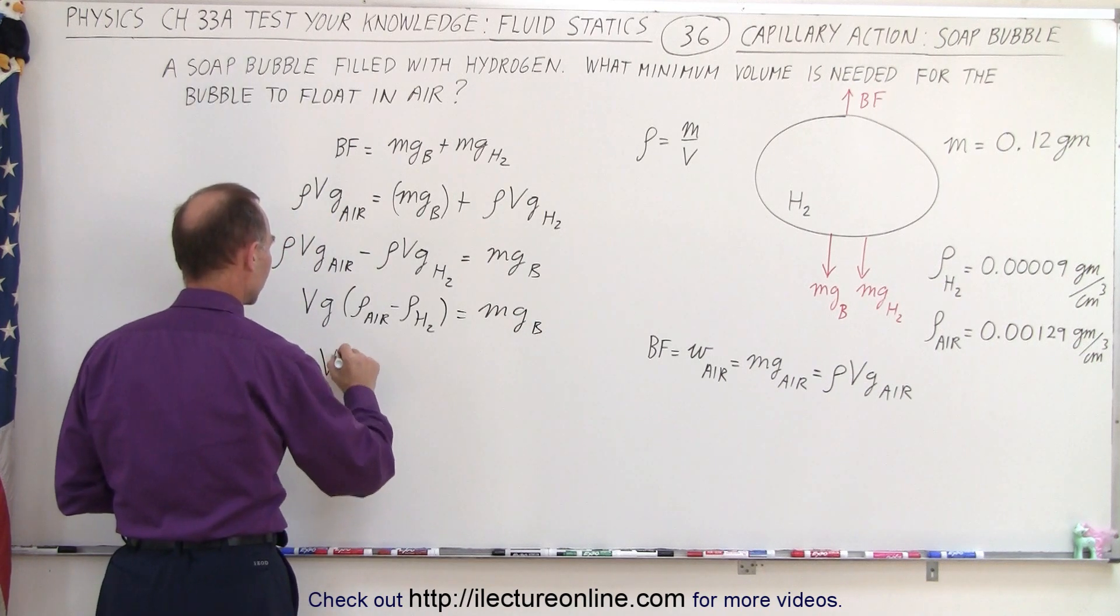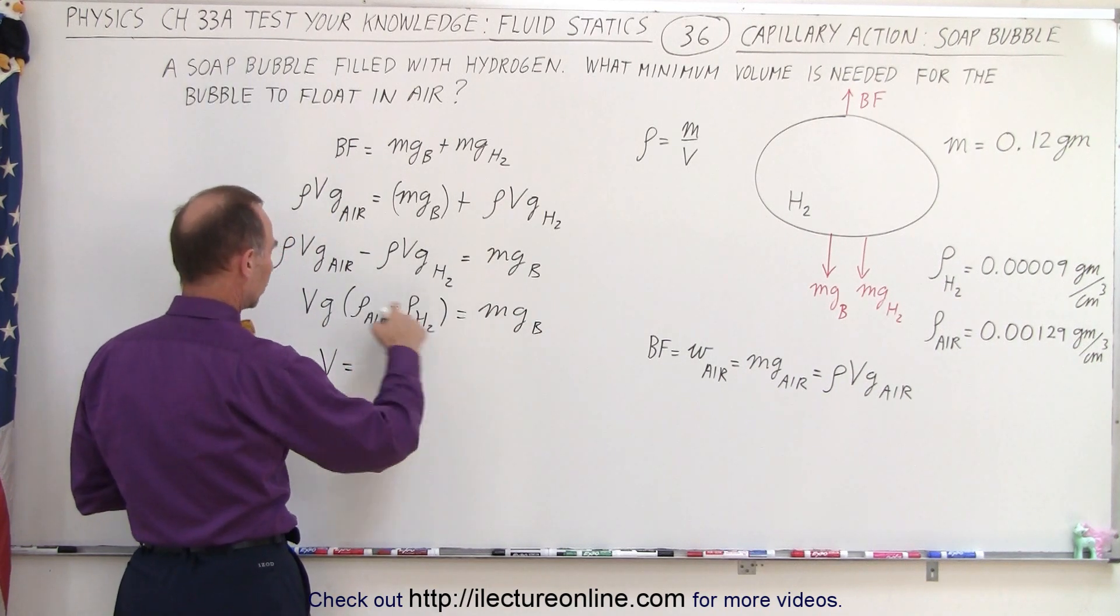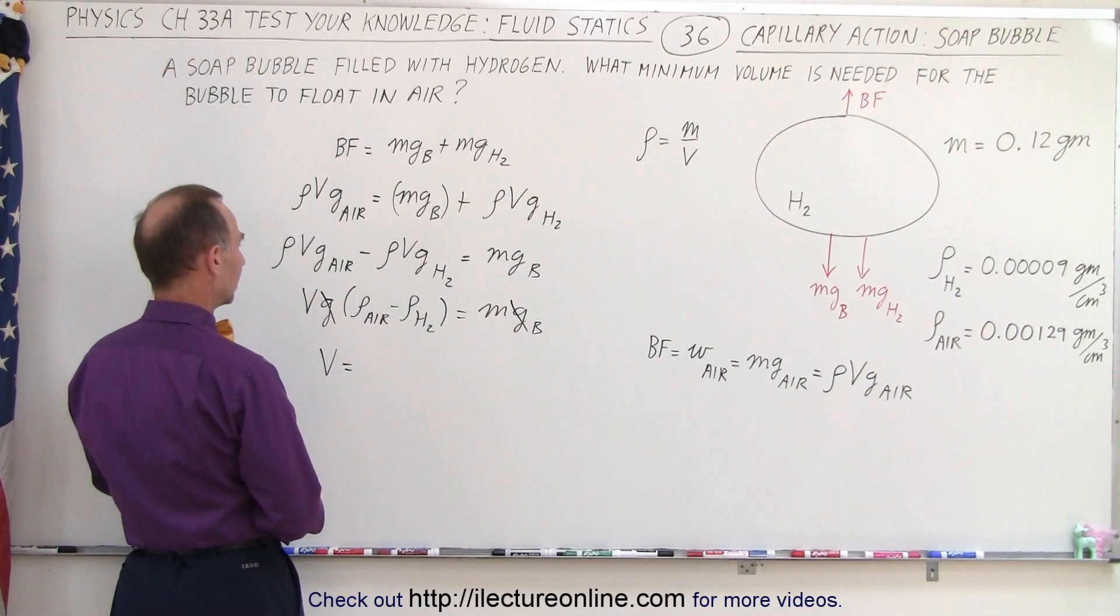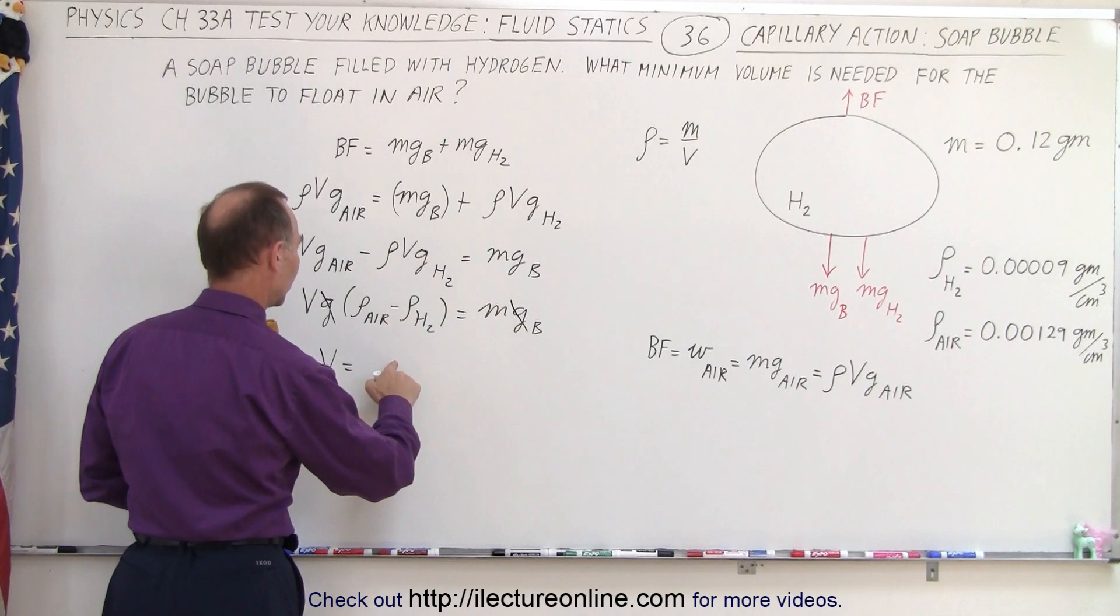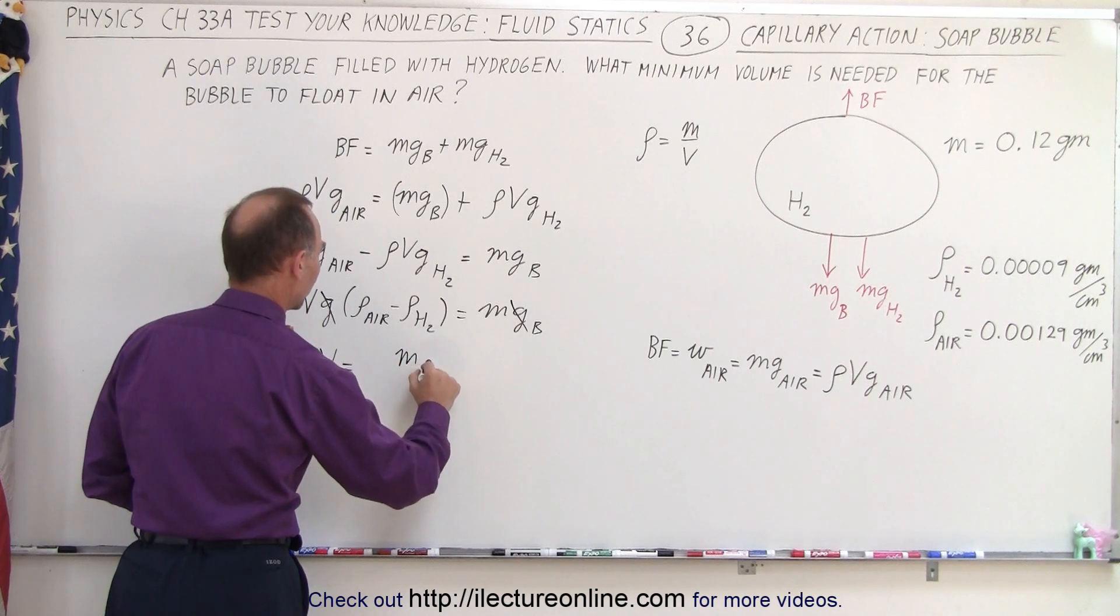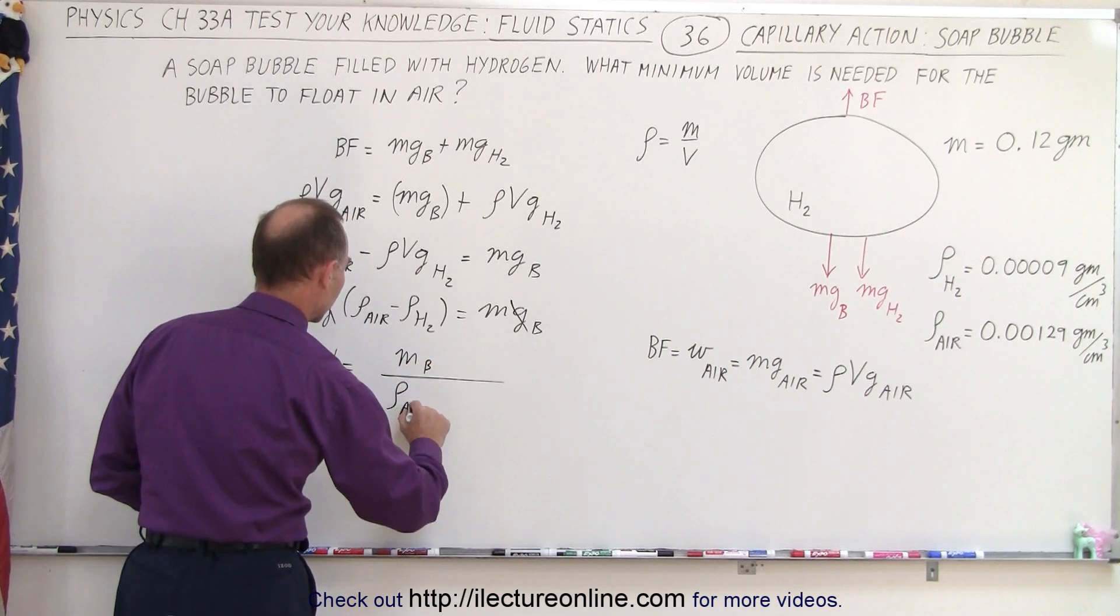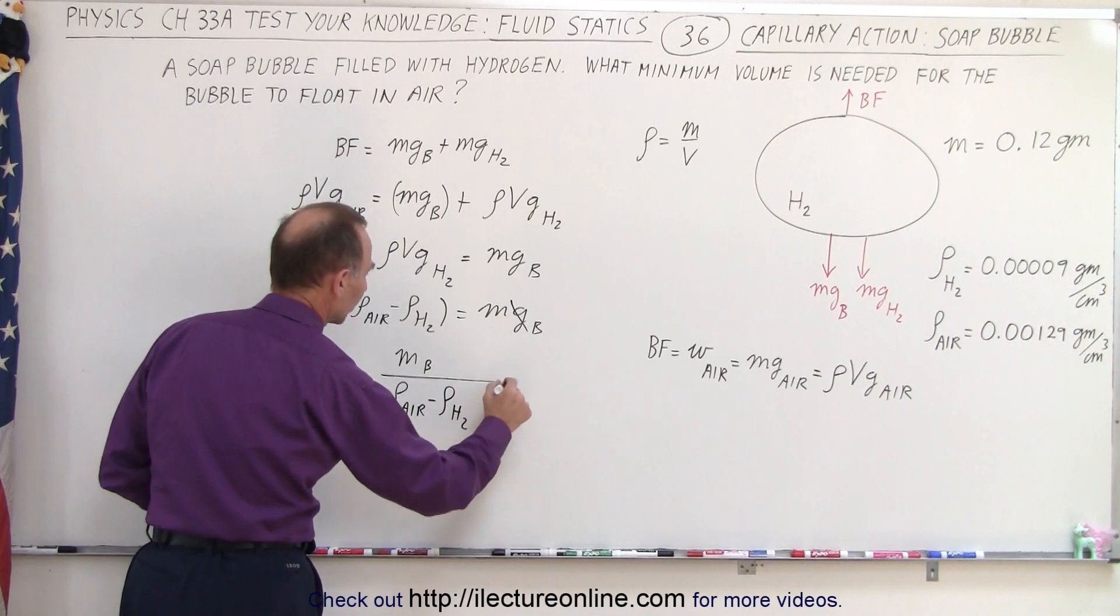And so finally, the volume is going to be equal to—now notice we have a g on both sides, so that cancels out. And that leaves us with the mass of the bubble divided by the density of the air minus the density of the hydrogen.